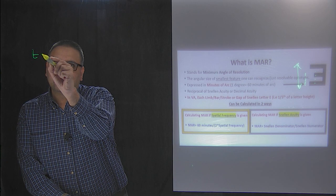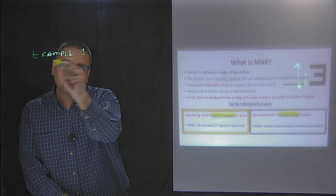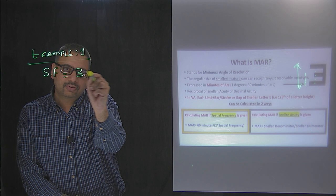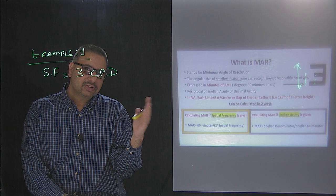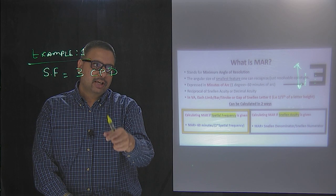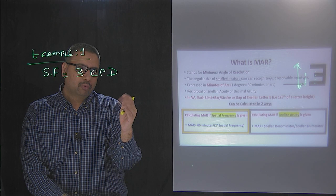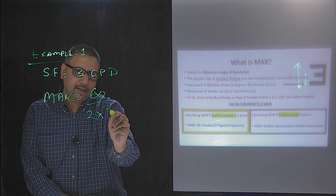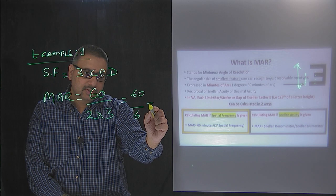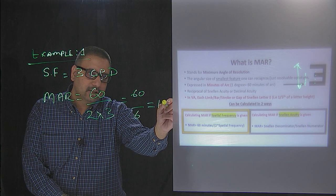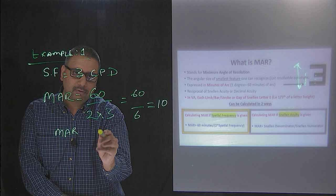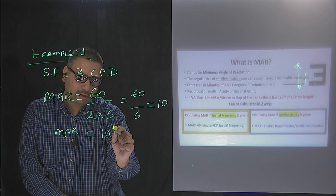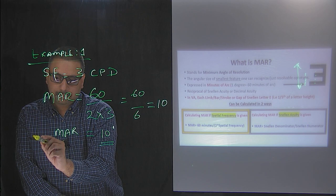Let's take Example 1: a spatial frequency of a target is about 3 cycles per degree. Remember, 3 cycles per degree means a degree is 60 minutes. Each cycle has 1 black bar and 1 white bar. Plugging into the formula, MAR = 60 divided by (2 × 3) = 60/6 = 10. So the MAR for a spatial frequency of 3 cycles per degree is 10 minutes of arc.